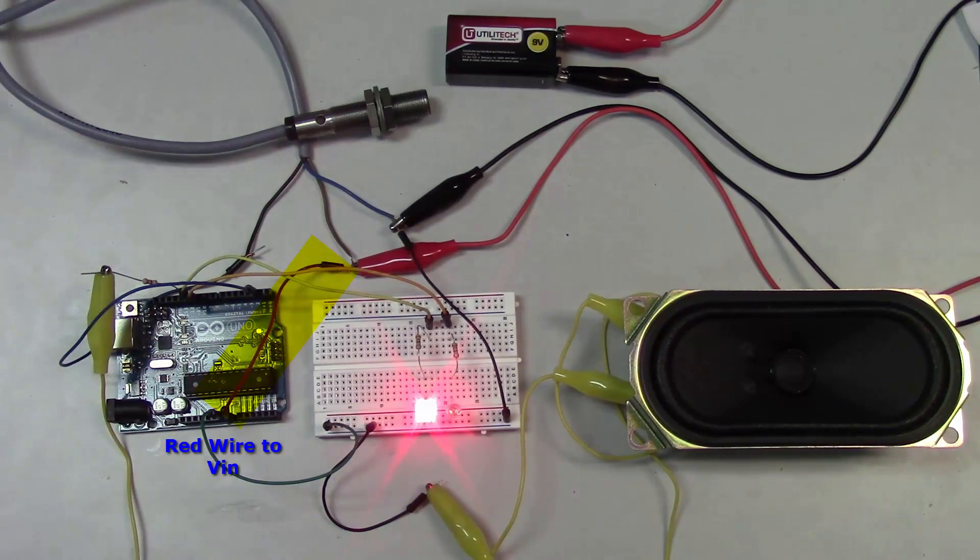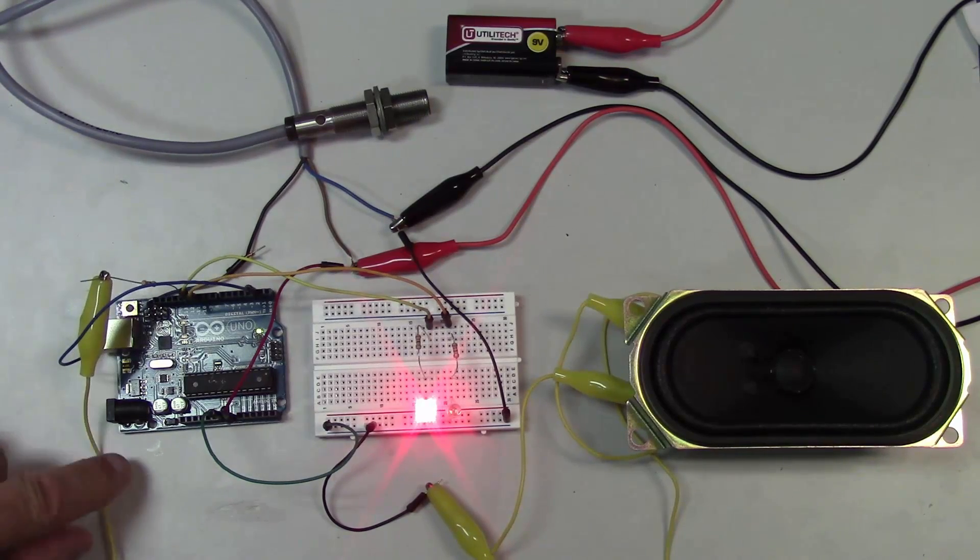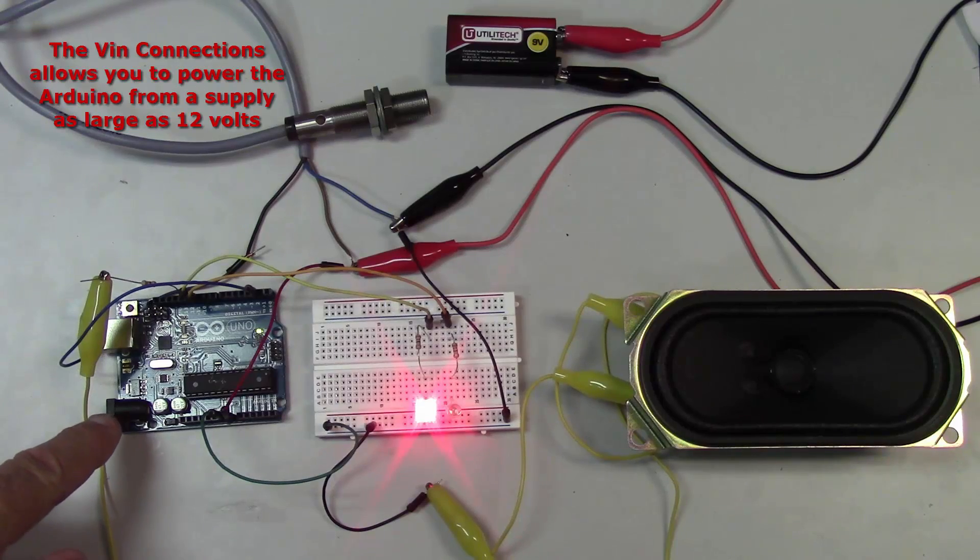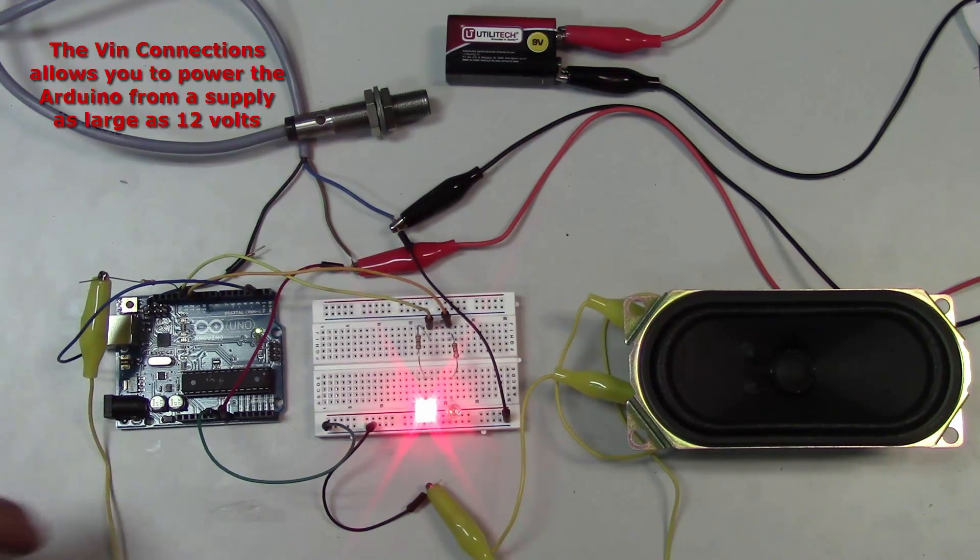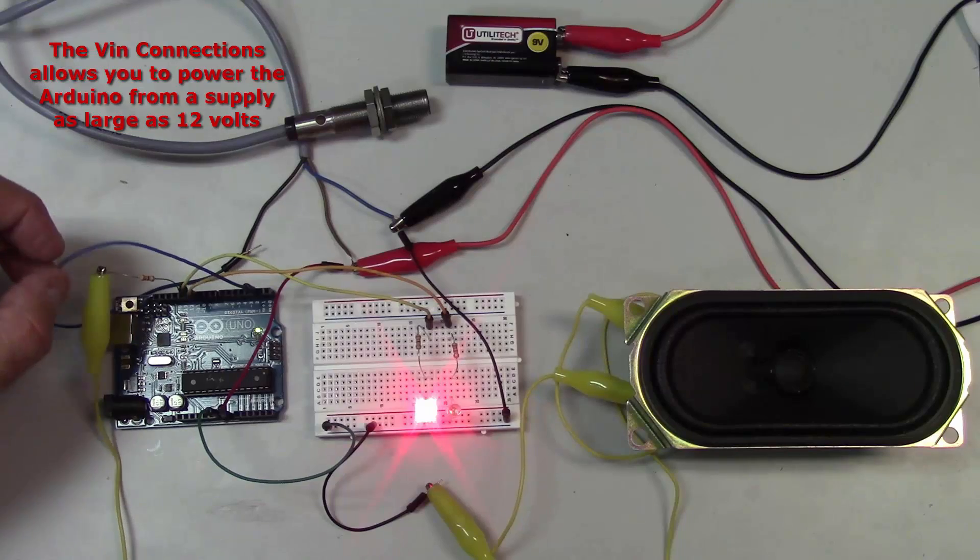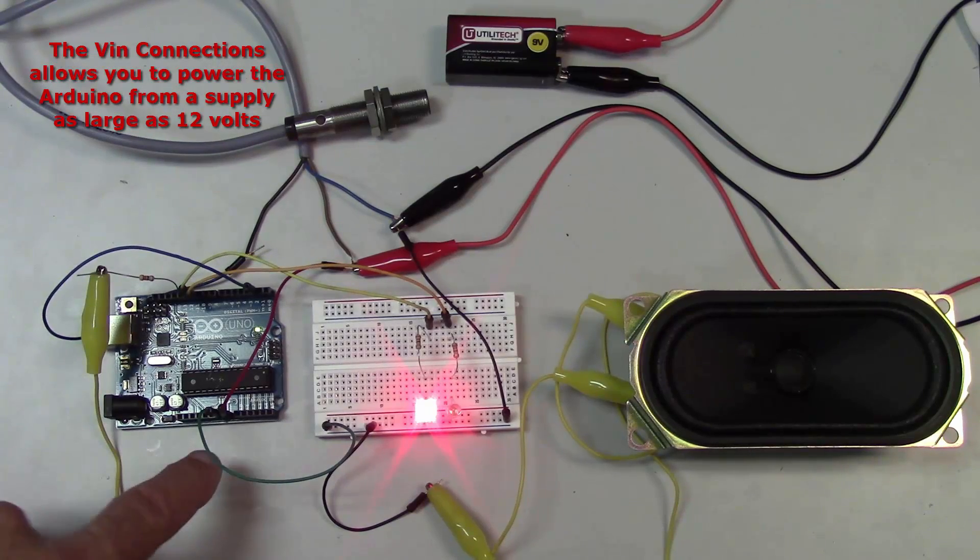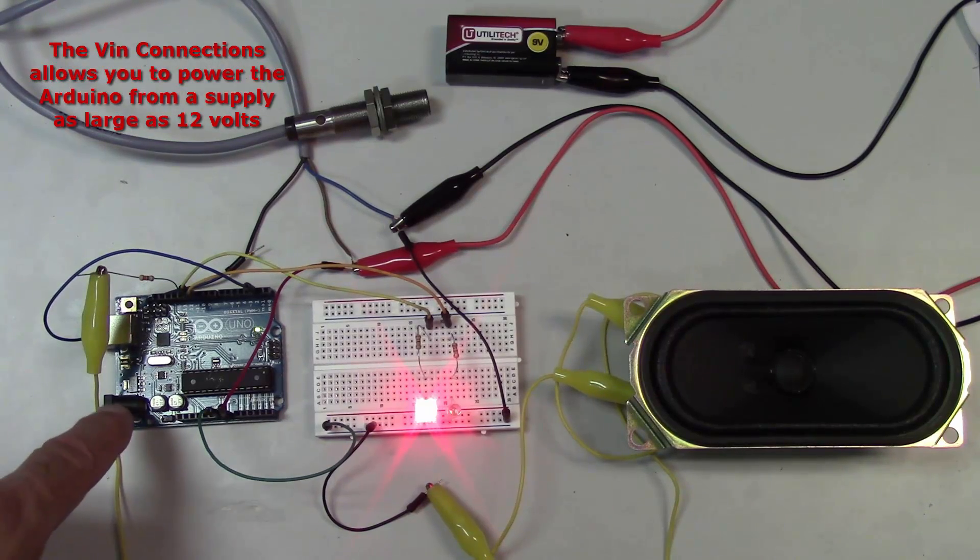This VIN pin on the Arduino is for an unregulated voltage that you're using to power the Arduino. It's really hooked to the same point that your coax cable would hook to your Arduino.